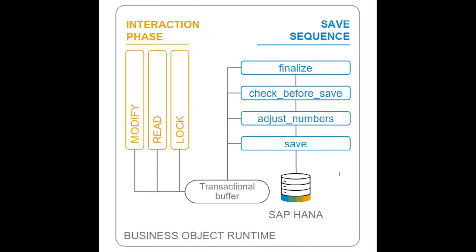So let's talk about the last one, business object runtime. So it has two phases. One is interaction phase and there is a save sequence. So in the interaction phase we have methods related to modifying the transaction data. So here the modify method, read, lock, and all these methods will be responsible for modifying the data and this data will be modified into the transactional buffer.